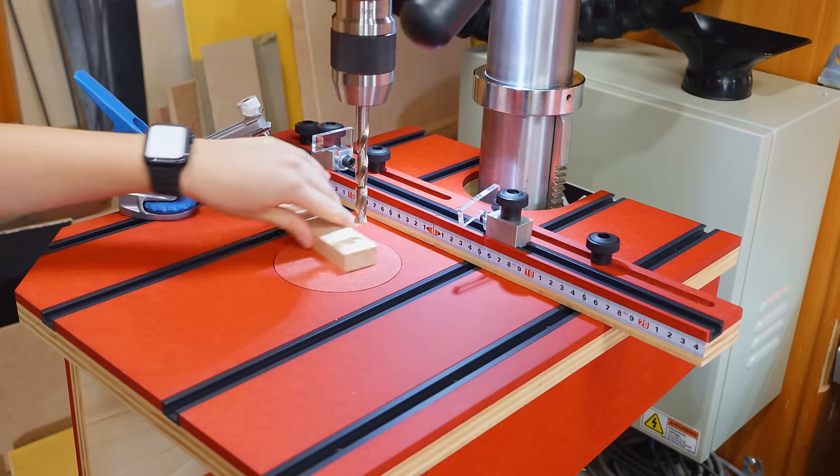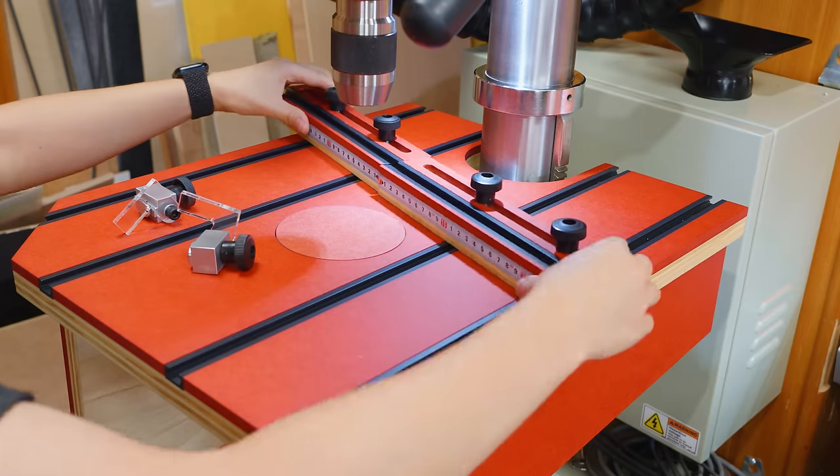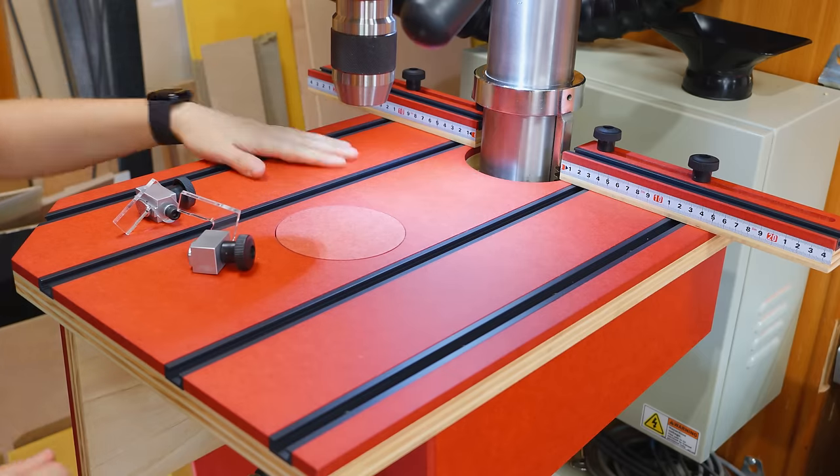I just built a drill press table with super cool features. It has a split fence design that's free to do any angle and go behind a column line when the entire throw depth is needed.